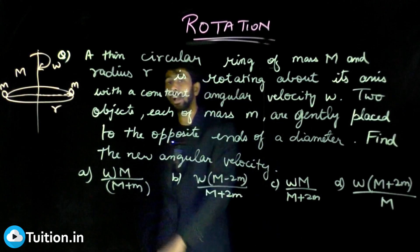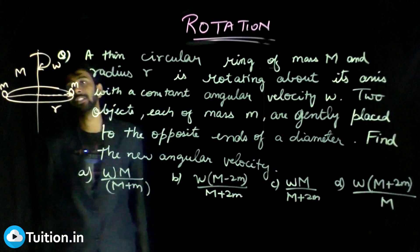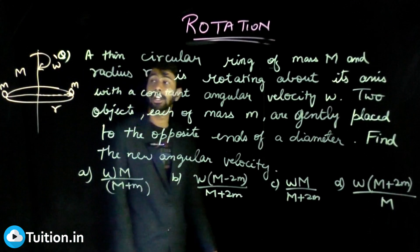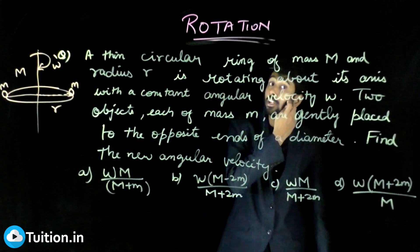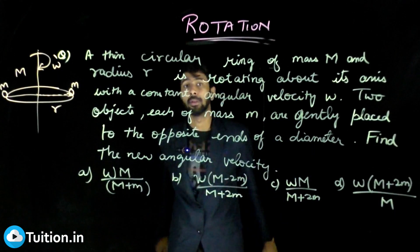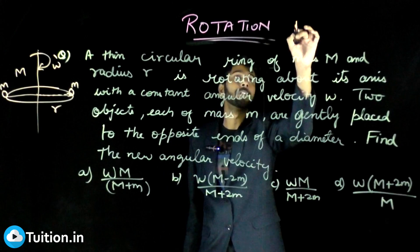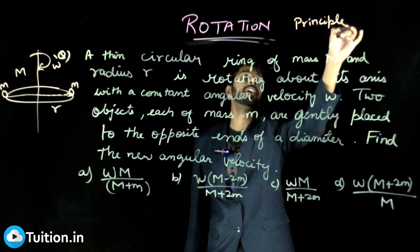You need to find the new angular velocity. Will this angular velocity change? Let it change to some omega dash. You need to find this omega dash. What is the principle in this problem? That is the first question. What is the principle? How will you do this problem? What is the starting idea?